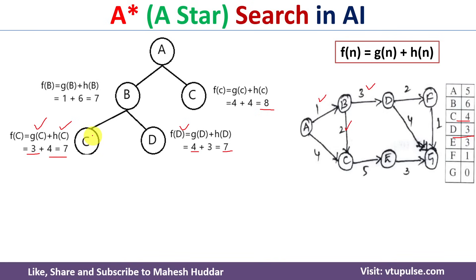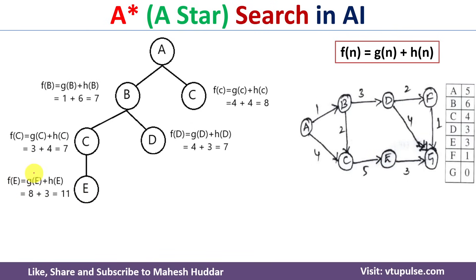We check whether C is a goal node — it is not. We find all reachable nodes from C; there is only one: E. The cost for E: f(E) = g(E) + h(E). The path to E is A→B→C→E, so g(E) = 1 + 2 + 5 = 8, and h(E) = 3, giving f(E) = 11. Comparing all leaf nodes — C (via A, 8), D (7), and E (11) — D has the minimum cost of 7, so we select D.